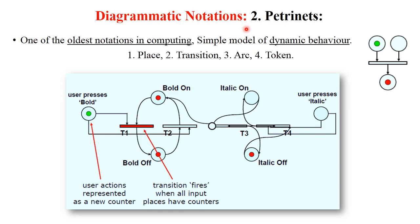The second type of diagrammatic notation is Petri nets. Petri nets is one of the oldest notations in computing and is a simple model for dynamic behavior — it shows how your system dynamically works. Petri nets has four components: place, transition, arc, and token. For example, a green signal represents the user pressing the bold button, and a red signal represents the user pressing the italic button. The states (T1, T2, T3, T4) show bold on, bold off, italic on, and italic off transitions.